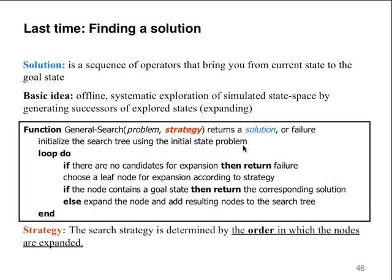The search strategy is determined by the order in which the nodes are expanded. When we talk about a search, usually we're referring to trees, and we have nodes in the trees — we're searching through a list, searching through a tree. We can expand them top-down, bottom-up, left, right. We can search two at a time, four at a time. We can expand certain areas and not others. That's basically the strategy in terms of the search solution.